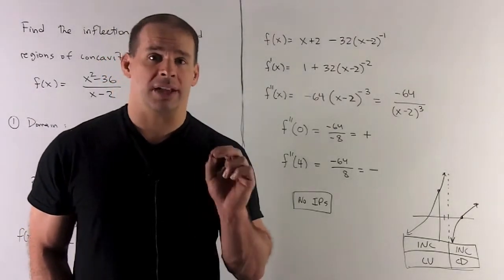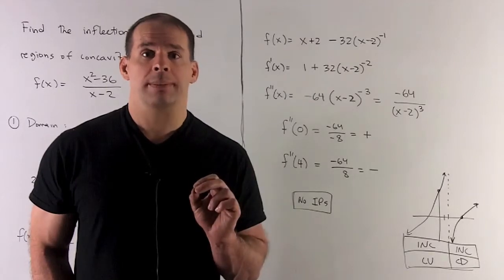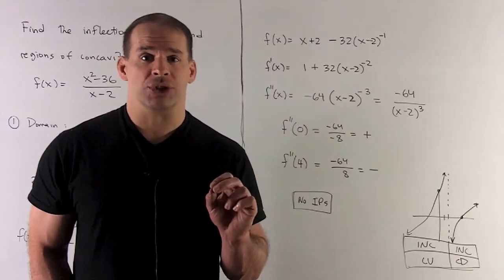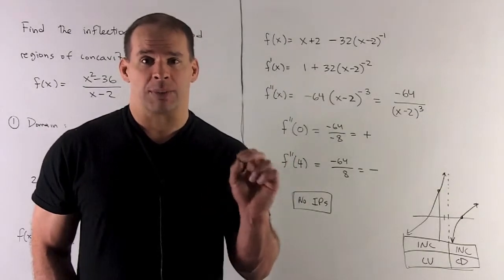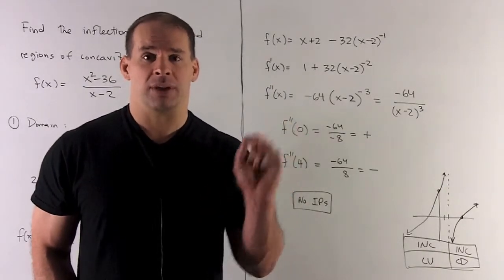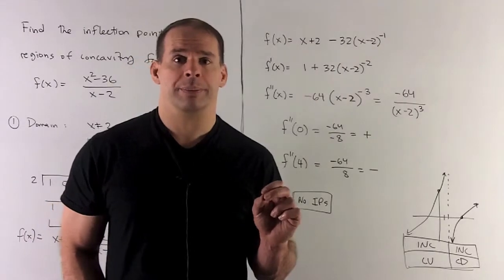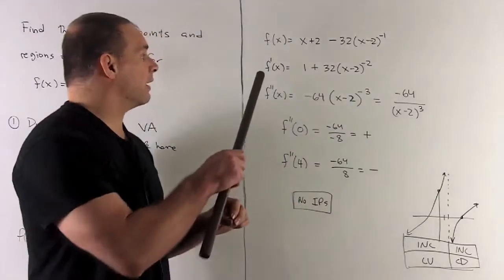And now I can take the derivative of that. The x goes to a 1. Then, on the other term, we use the chain rule. Minus 1 comes down. It's going to be (x - 2)^(-2). And then, derivative of the inside is equal to 1. So that's my first derivative.